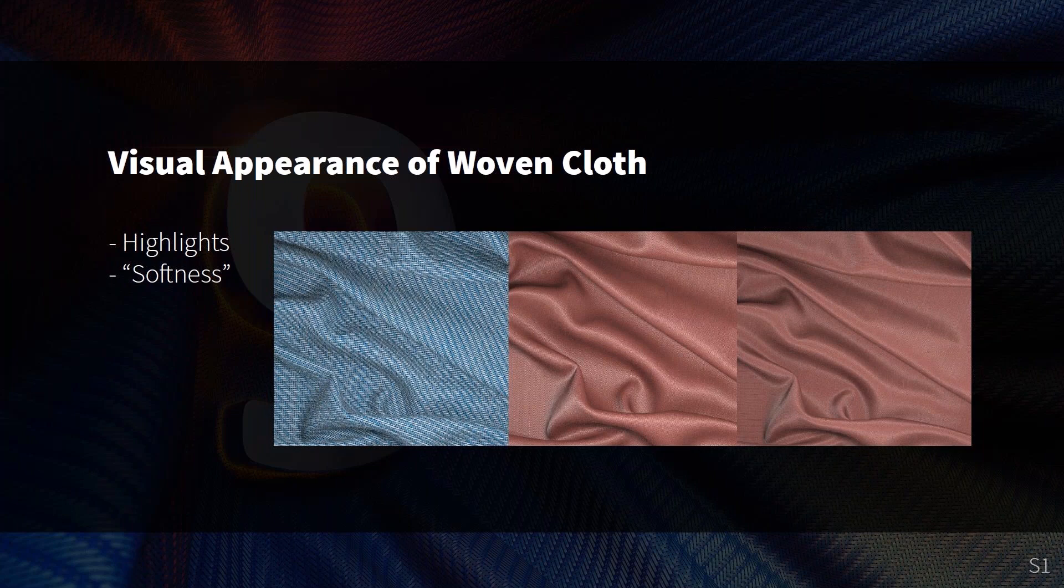For cloth, there are two aspects of the visual appearance that we want to be sure we could reproduce with a new material. The first is the highlights. You can see in these images that the highlights are very different, and I will come back to that in a moment. Highlights in textiles are very much more complex than other materials.